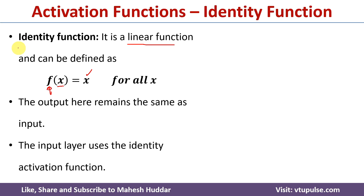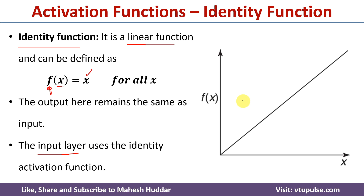Usually, we use this identity or linear activation function on the input layer, where we do not perform any transformation. Whatever the input is there, the same thing will be transformed to the next layer. This is how we can show the identity activation function in pictorial representation. As the value of x increases, the value of f(x) increases linearly.